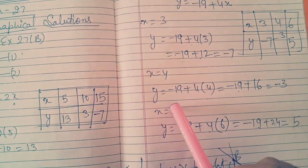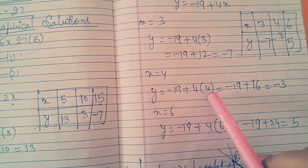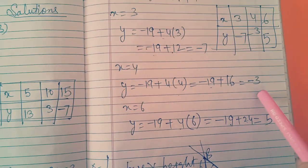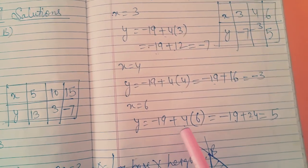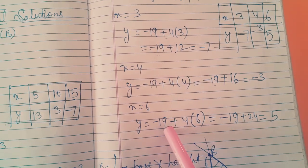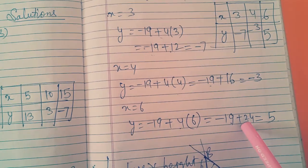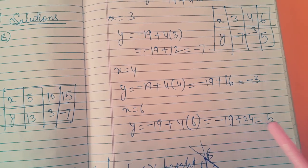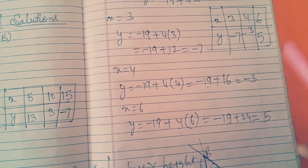Then x is equal to 4, so minus 19 plus 4 into 4, 4 into 4 is 16. So 19 minus 16 will give us minus 3. Again I will put 6, so minus 19 plus 4 into 6, 4 into 6 is 24. 24 minus 19 is 5. 24 is bigger number here, 24 is positive, so answer will be positive.